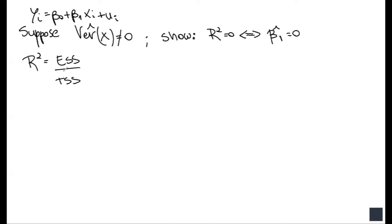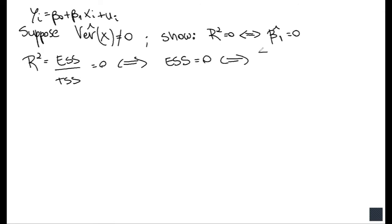For R squared to be equal to zero, it has to be the case that the explained sum of squares is equal to zero — we need the numerator to be zero. So R squared equals zero if and only if the explained sum of squares equals zero. Remember the definition of the explained sum of squares: it's the sum of squares of our prediction of y minus the average of y.